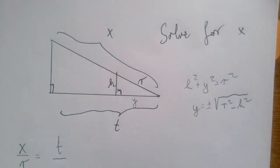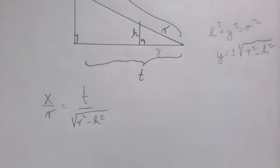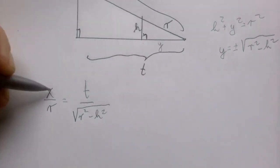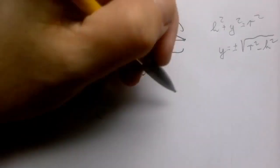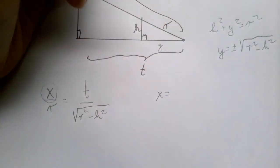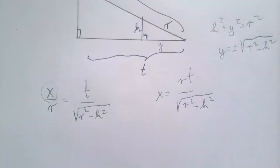Of course, in case of a distance, the negative one is thrown out. So now we have the ratio problem. And again, we just have to solve for X. Well, that's not going to be difficult. X is, we just multiply both sides by R, and we're going to get X is R T divided by square root of R squared minus H squared.